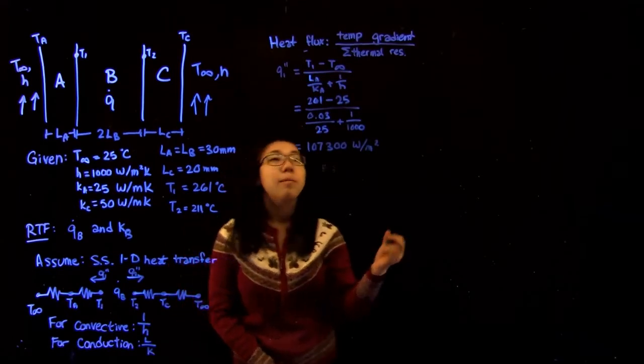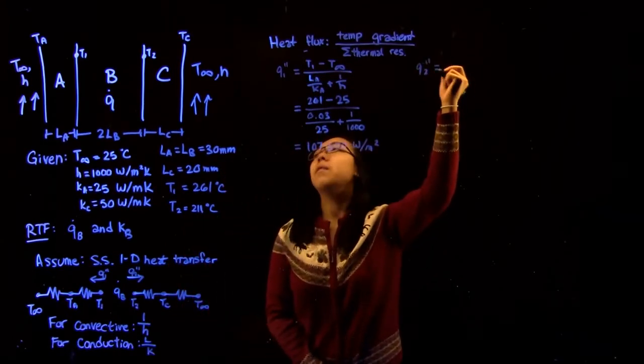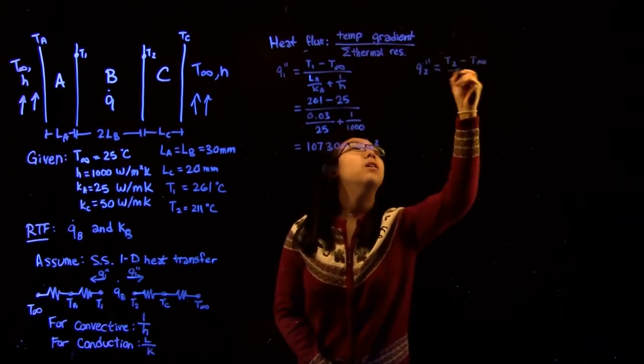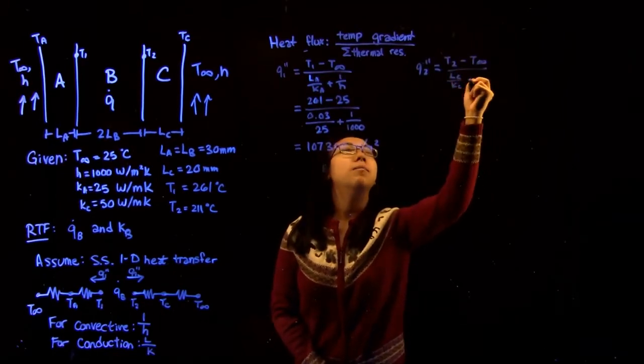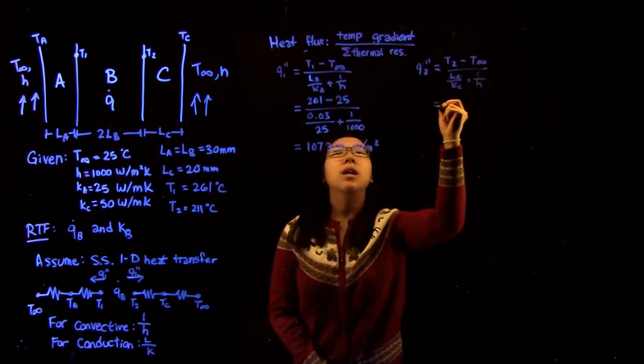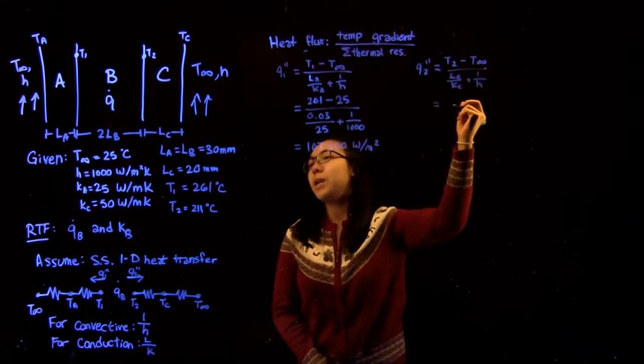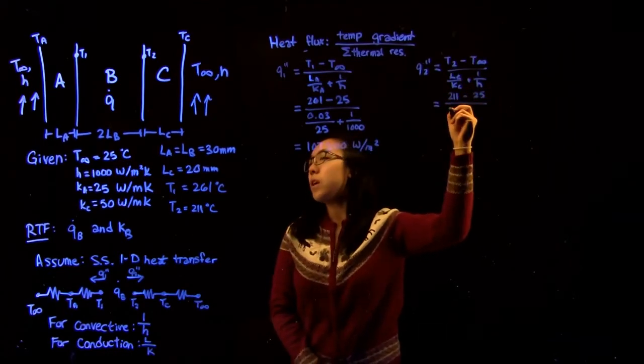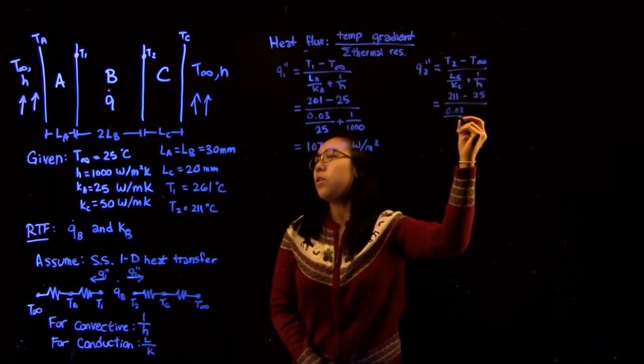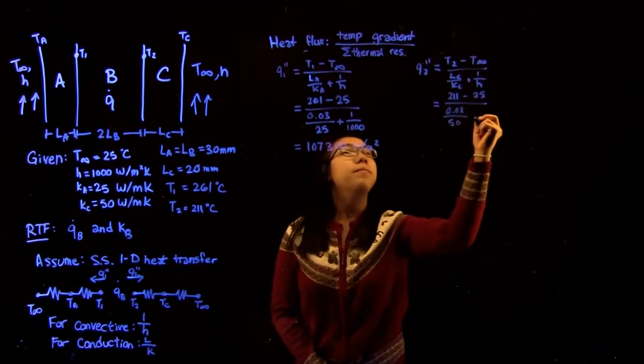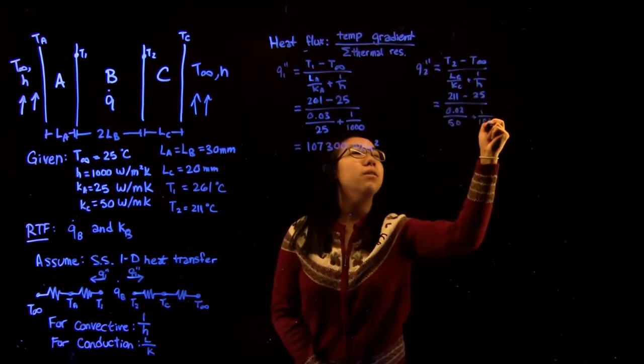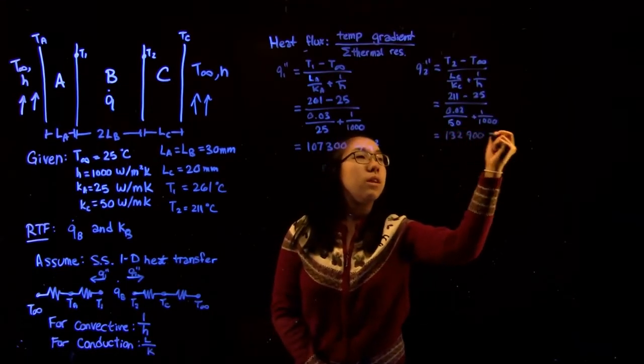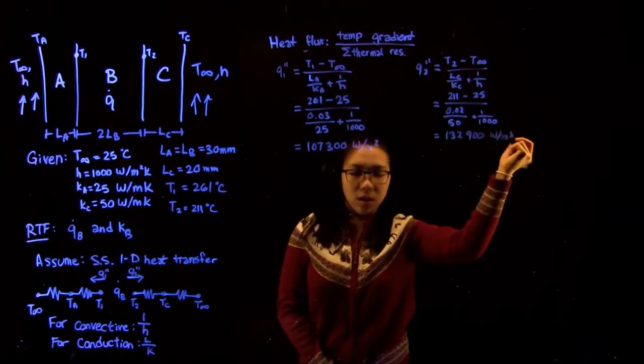We can do the same thing for the second flux Q2. It's a very similar calculation where you have T2 minus T infinity over Lc over Kc plus 1 over H. When we substitute in our values we get 211 minus 25 over 0.02 over 50 plus 1 over 1000. That gives us a flux of 132,900 watts per meter squared.